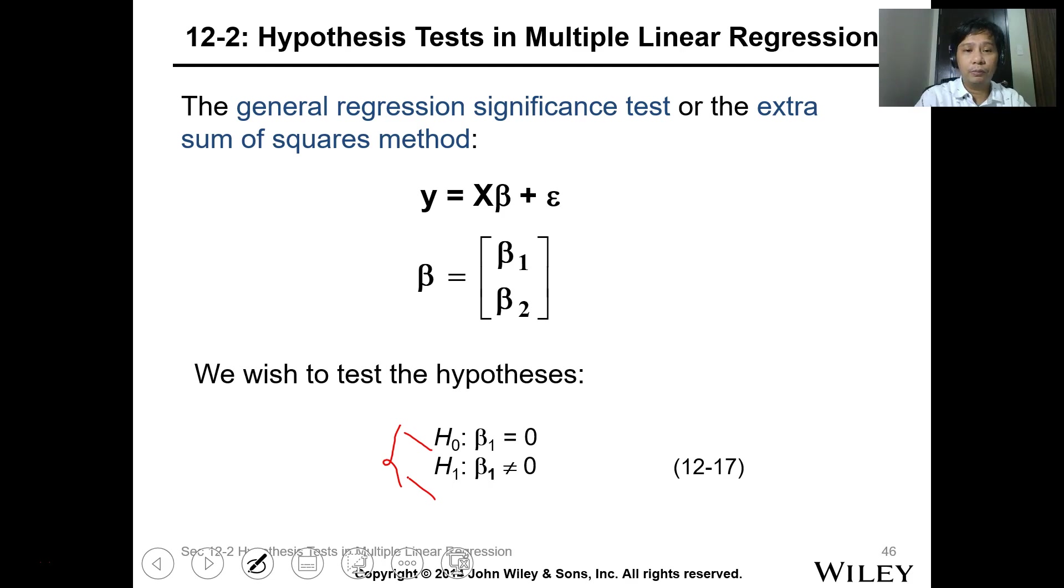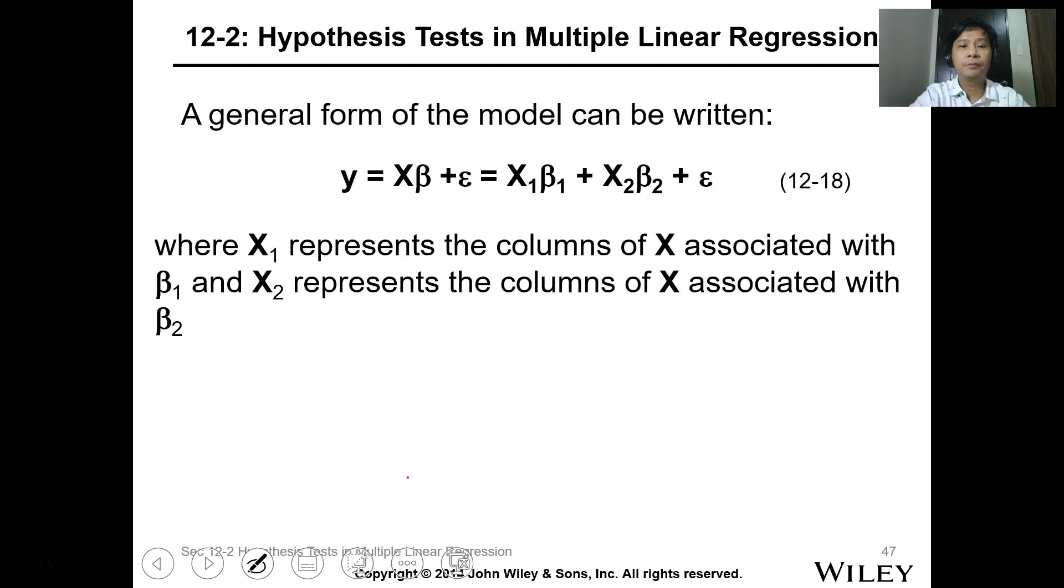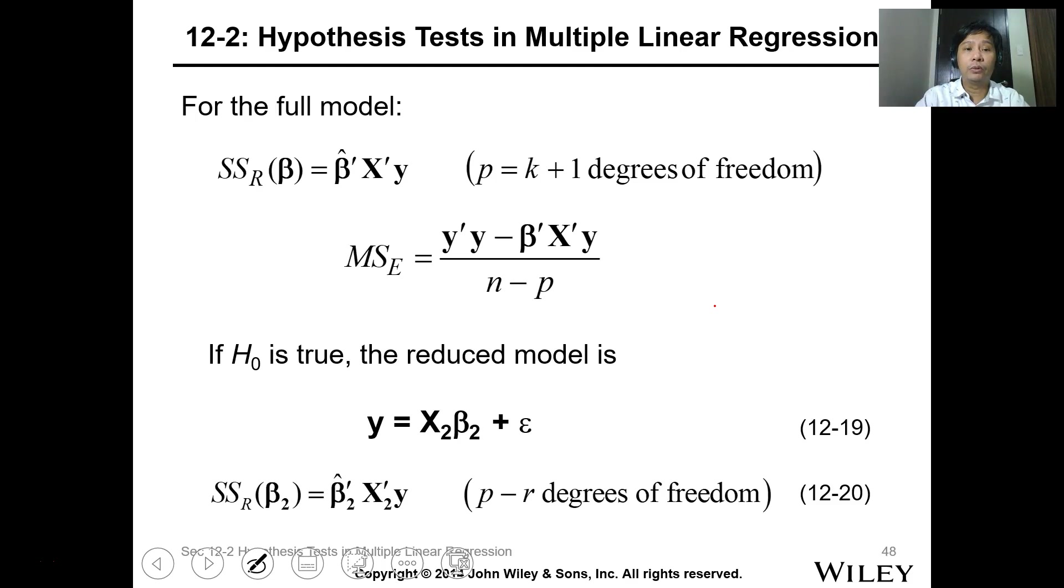So the general form - this is the data where x1 represents the column associated with β1, x2 represents the column associated with β2. Now for the full model, we can get the SSR.